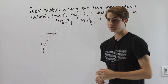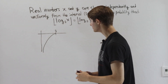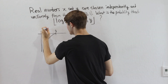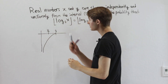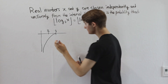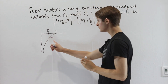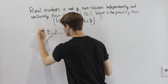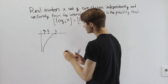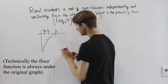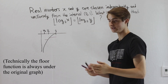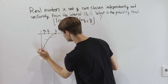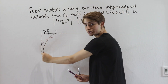Thinking about the floor function of this graph: at x equals one half, log base 2 of one half equals negative 1, so in the whole interval from one half to 1 the floor function equals negative 1. Then all the way down to one quarter, the floor function equals negative 2, because log base 2 of one fourth is negative 2. We get smaller intervals for negative 3, negative 4, negative 5, and so on, continuing down to infinity with really small intervals.